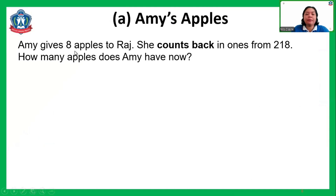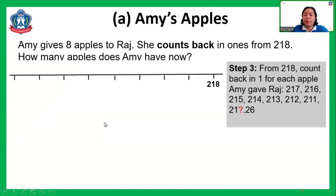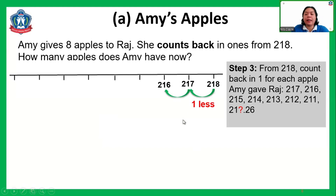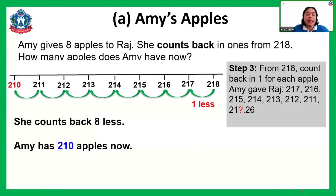Now Emmy gives eight apples to Rudge. She counts back in ones from 218. When we count back, we subtract one each time: 217, 216, 215, 214, 213, 212, 211, and 210.